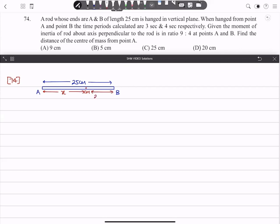When hanged about A - if we hang it about point A, then its time period will be TA = 2π√(IA/mgx), where d is x. Let's call it equation 1.